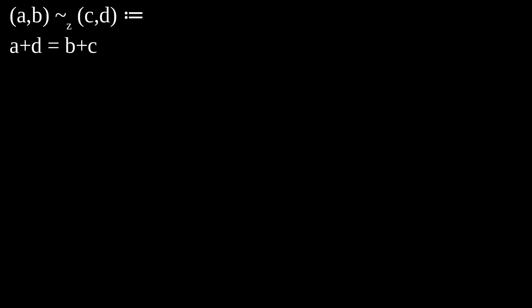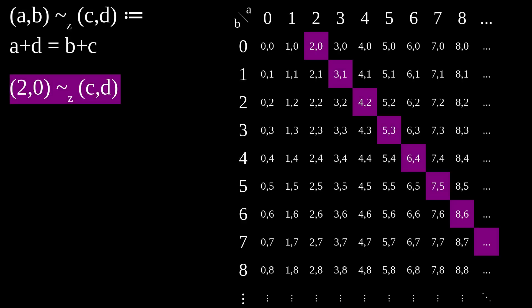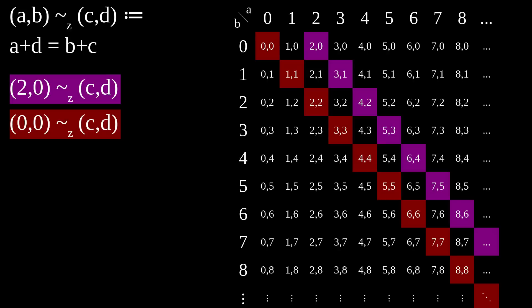More generally, if we list all these pairs in a grid like this, it's easy to see that all of the ones equivalent to 2,0 lie on this violet diagonal, the ones equivalent to 0,0 lie on this red one, and if I color all the diagonals, it's easy to see that any two elements in the same diagonal are equivalent to each other. These sets of objects, which are all equivalent to each other, are in general referred to as equivalence classes.